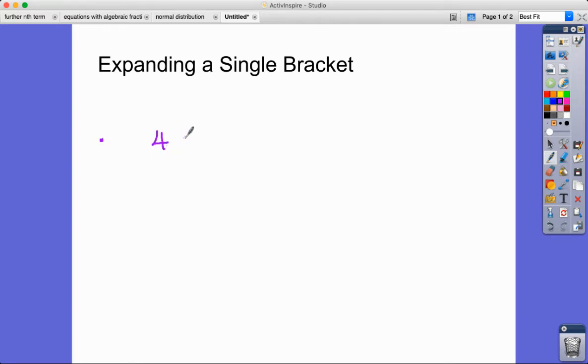So a classic starting example is something like 4 brackets 3x plus 2. You might have seen something like this in your homework. All this means is that this bracket 3x plus 2 is being multiplied by 4. That's all it means. So basically all it means is that everything inside this bracket, the 3x and the 2, are going to be multiplied by 4.